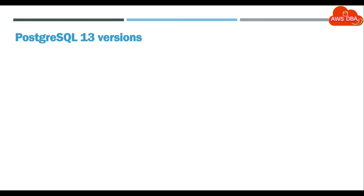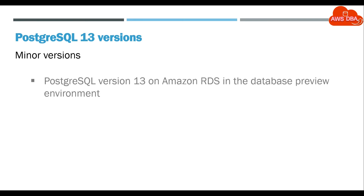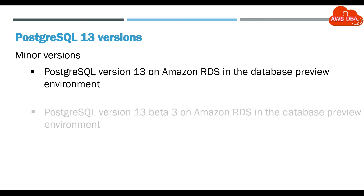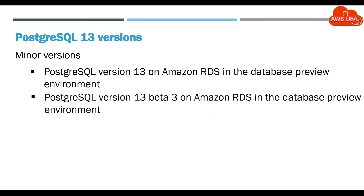PostgreSQL 13 versions — minor versions. PostgreSQL version 13 on Amazon RDS is available in the database preview environment. PostgreSQL version 13 beta 3 on Amazon RDS is also available in the database preview environment.